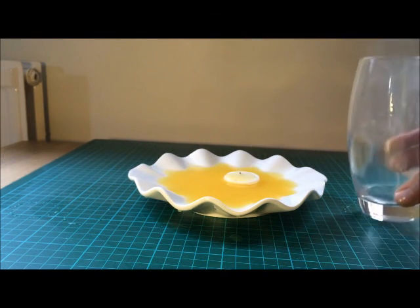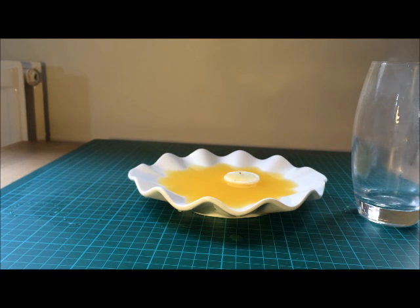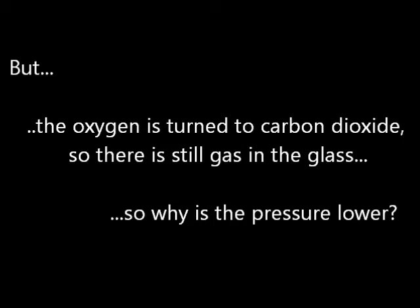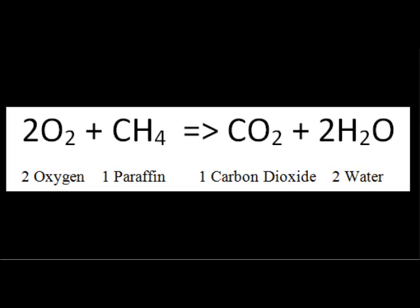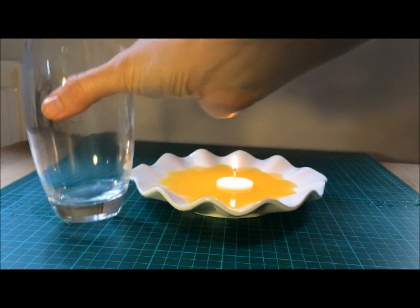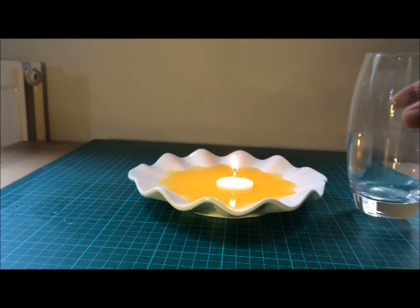When the candle goes out, the air contracts and even more liquid gets forced up into the glass. However, the oxygen is actually being turned to carbon dioxide, so there is still gas in the glass - which raises the question: why is the pressure lower? The pressure is lower because two oxygen molecules get converted to only one carbon dioxide. You also get two water molecules, but these get condensed inside the glass. So for every two oxygen molecules, you only get one carbon dioxide.